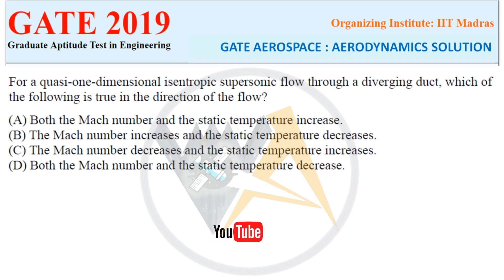First question: for a quasi one-dimensional isentropic supersonic flow through a divergent duct, which of the following is true in the direction of the flow? Option A: both the Mach number and the static temperature increase. Option B: the Mach number increases and the static pressure decreases. Option C: the Mach number decreases and the static temperature increases. Option D: both the Mach number and the static pressure decrease.